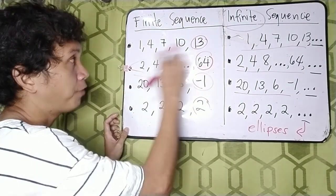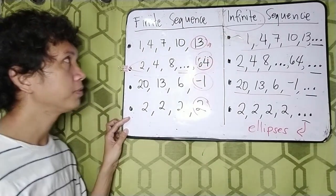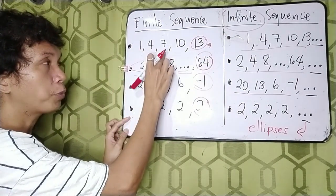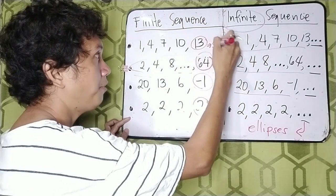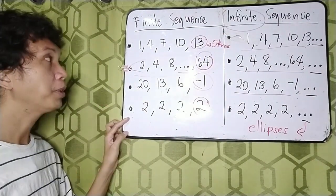So can you identify the number of terms in each example? So for this first sequence here, how many terms are there? 1, 2, 3, 4, 5. So there are 5 terms. Right? How about number 2?